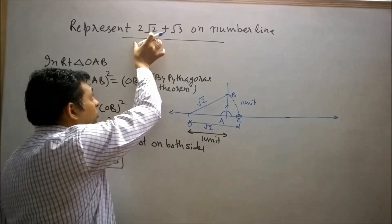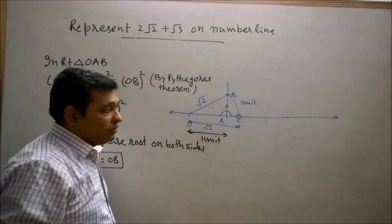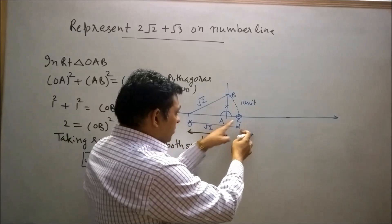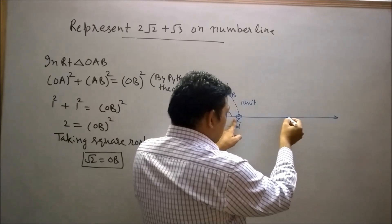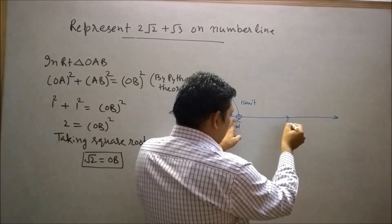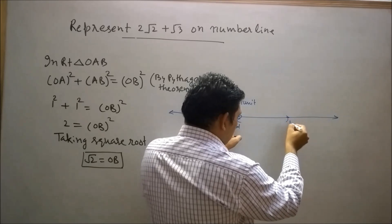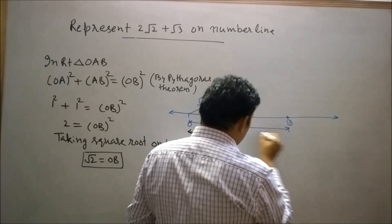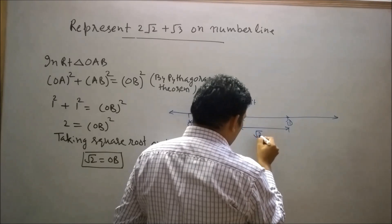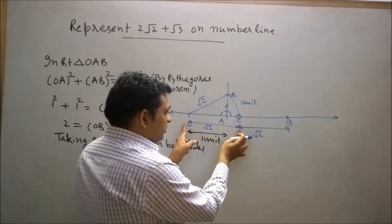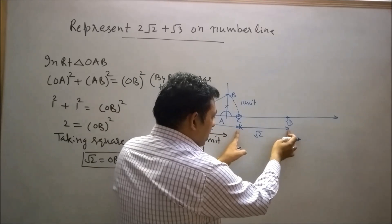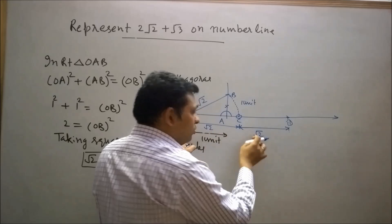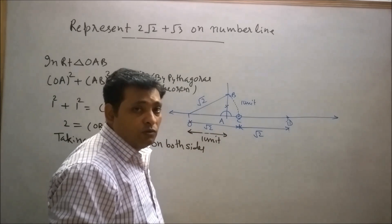First of all we will try to represent 2√2 on the number line. Draw an equal arc of OC from the center C. Let's say this arc will intersect the number line at point D. Then CD also represents √2. OC is √2 and CD is √2, so OD will be √2 plus √2, which equals 2√2.